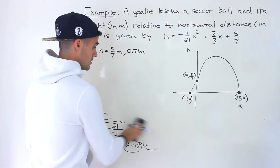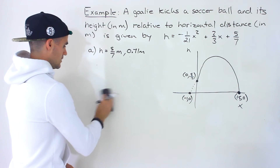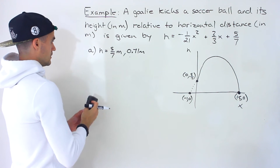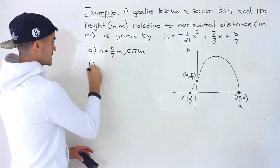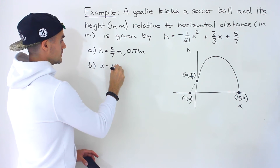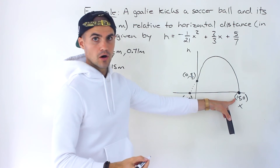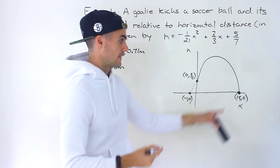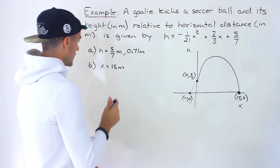So for part B, the horizontal distance is 15 meters. That's when the ball hits the ground, when the h value is zero.